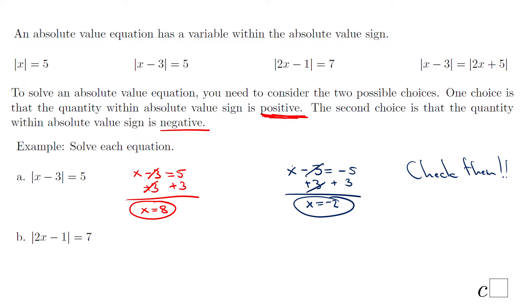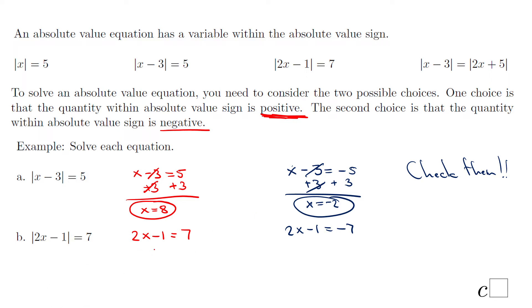Let's go to example B — very similar. We're going to say the quantity 2x minus 1 can equal positive 7, and the quantity 2x minus 1 can equal negative 7. Now let's solve each equation. This is a multi-step equation: we add 1 to get rid of the minus 1, so we have 2x equals 8, divide by 2, and we end up with x equals 4. You can check mentally: 2 times 4 is 8, minus 1 is 7, absolute value of 7 is 7 — so it's a good solution.